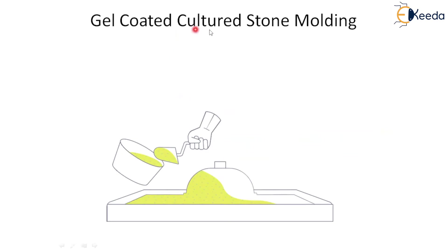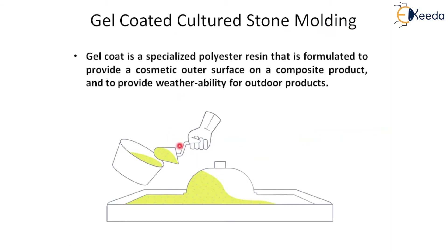Within cast polymer molding, the gel coat cultured stone molding process involves applying gel coat first — a specialized polyester resin formulated to provide a cosmetic outer surface on a composite product and to provide weather resistance for outer products. This specialized polyester resin provides the cosmetic outer surface, which is why this process is very important in the closed molding process. Gel coat consists of a base resin and additives.